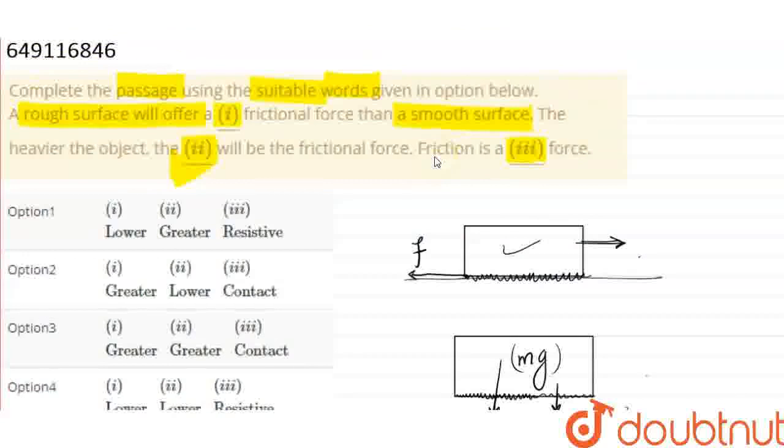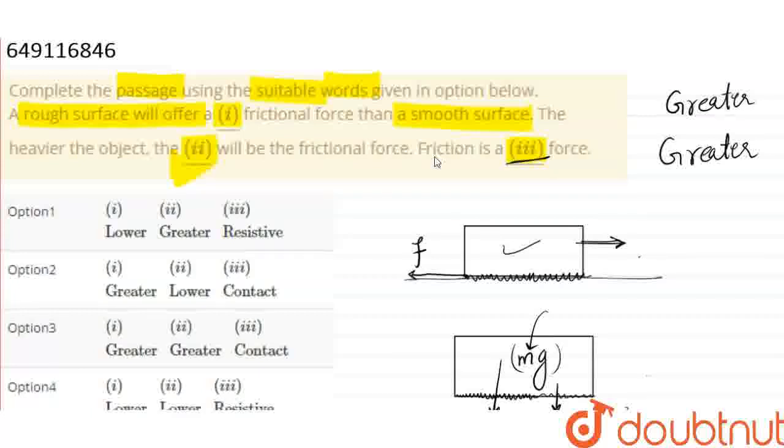Rough surface will offer greater friction. Rough surface will offer greater friction. Rough surface interlocking will be greater. The first option is greater. The second option is smooth surface. The second option is heavier object. The heavier object is greater rather than lighter object, because friction depends on the weight. The third option is friction force, contact force or resistive force. Contact force.